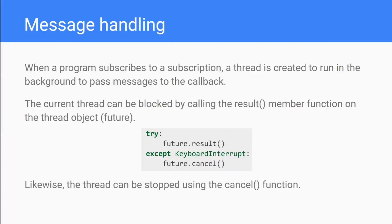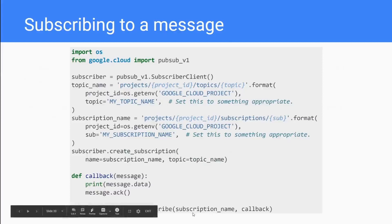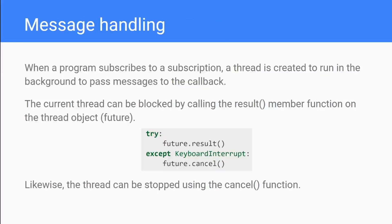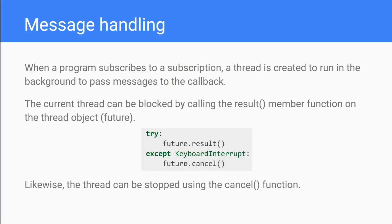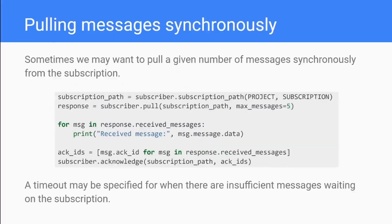The future object is used because when a program subscribes to a subscription in Python, a thread is created to run in the background which passes messages to the callback. So when you call `.subscribe()`, a new background thread starts running, and the main thread continues as normal. Whenever a message is received, the callback function is run in that background thread. Sometimes you might want to block the current thread while working with the subscription - you can do that using the future object by calling `.result()` on it. You can also end listening by calling `future.cancel()`.